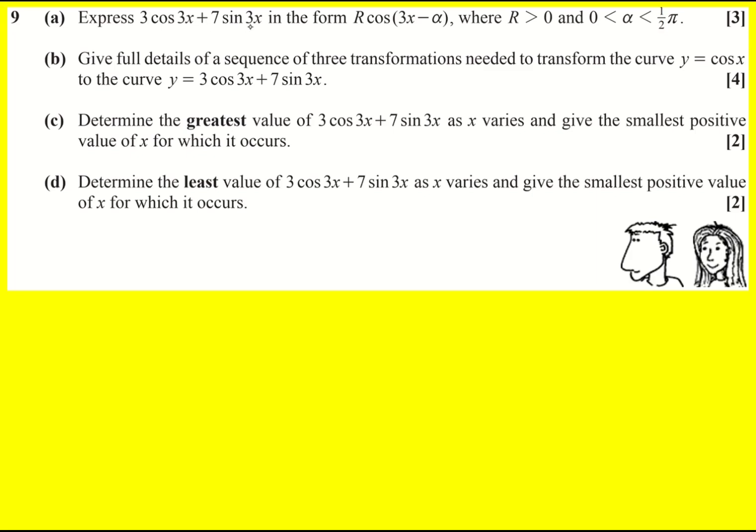Express 3 cos 3x plus 7 sine 3x in this form where R is greater than zero and the angle is acute. We're working in radians here. Well, this involves addition formulae. So I'm going to write down the one for cos and then I've got cos 3x minus alpha, so I'm going to replace A by 3x and I'm going to replace B by alpha and I'm going to make sure I stick a minus in.